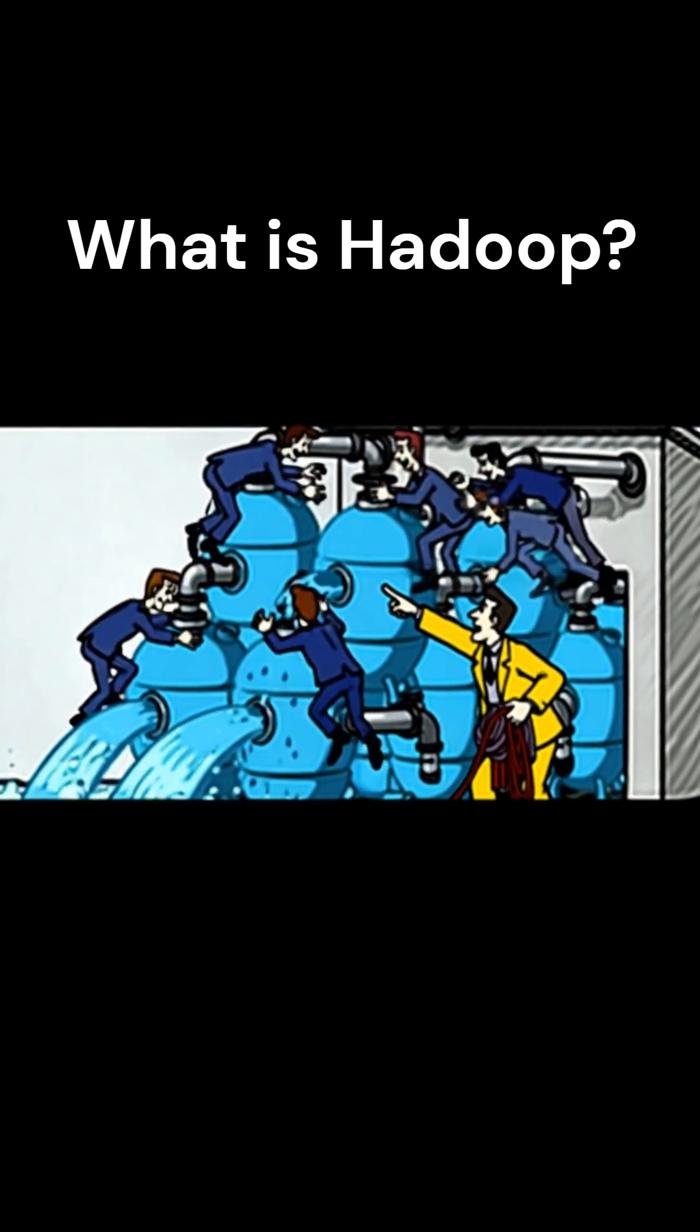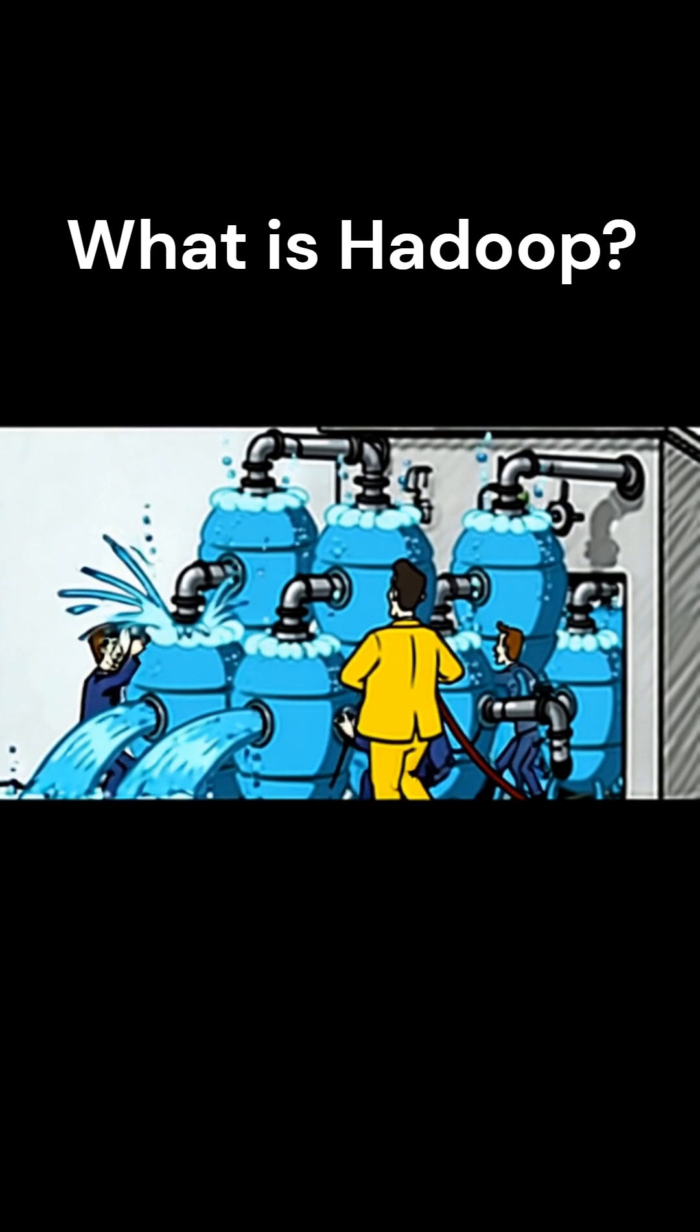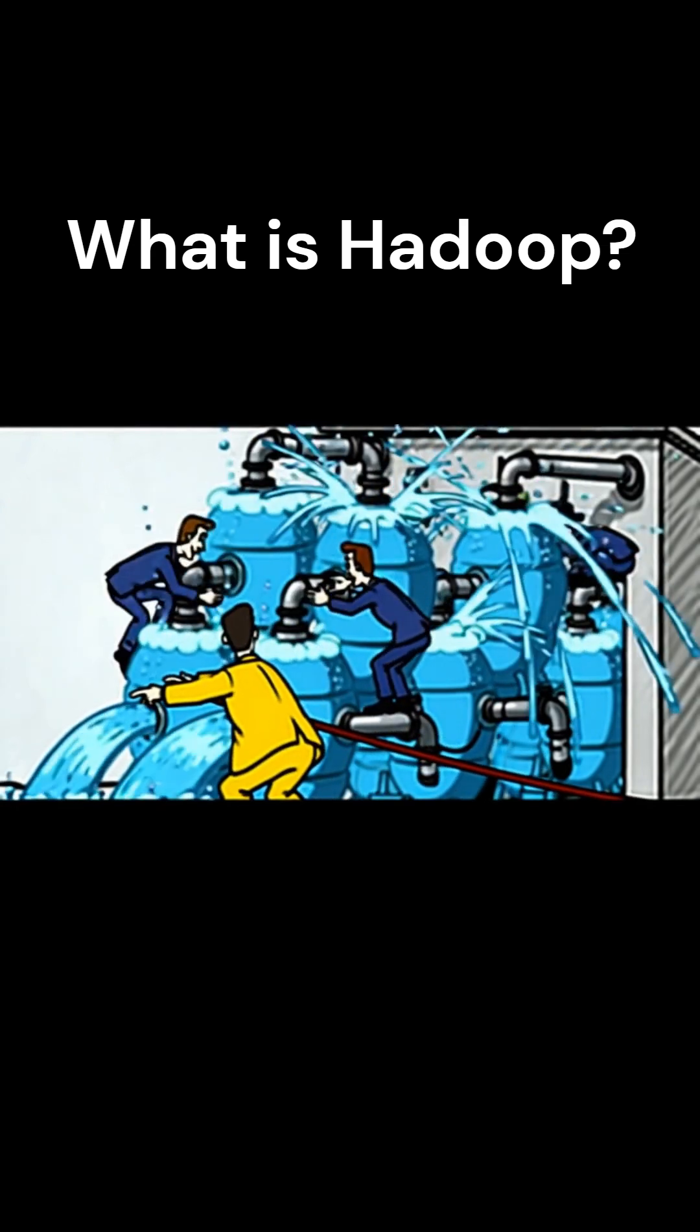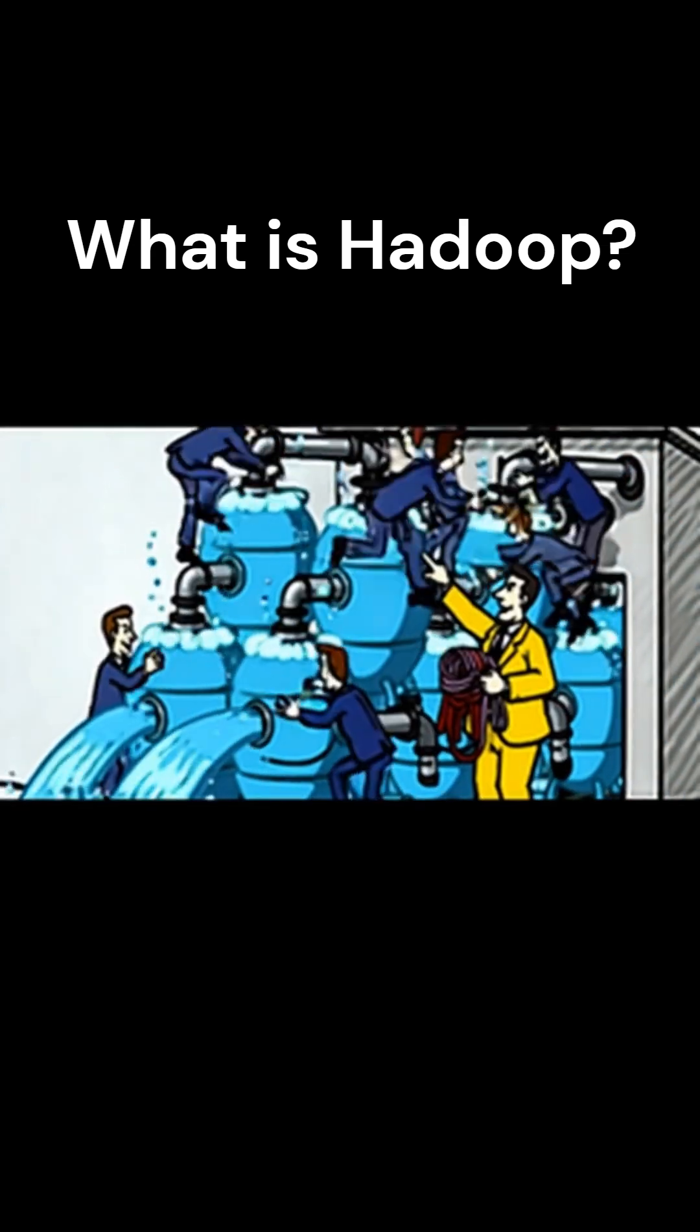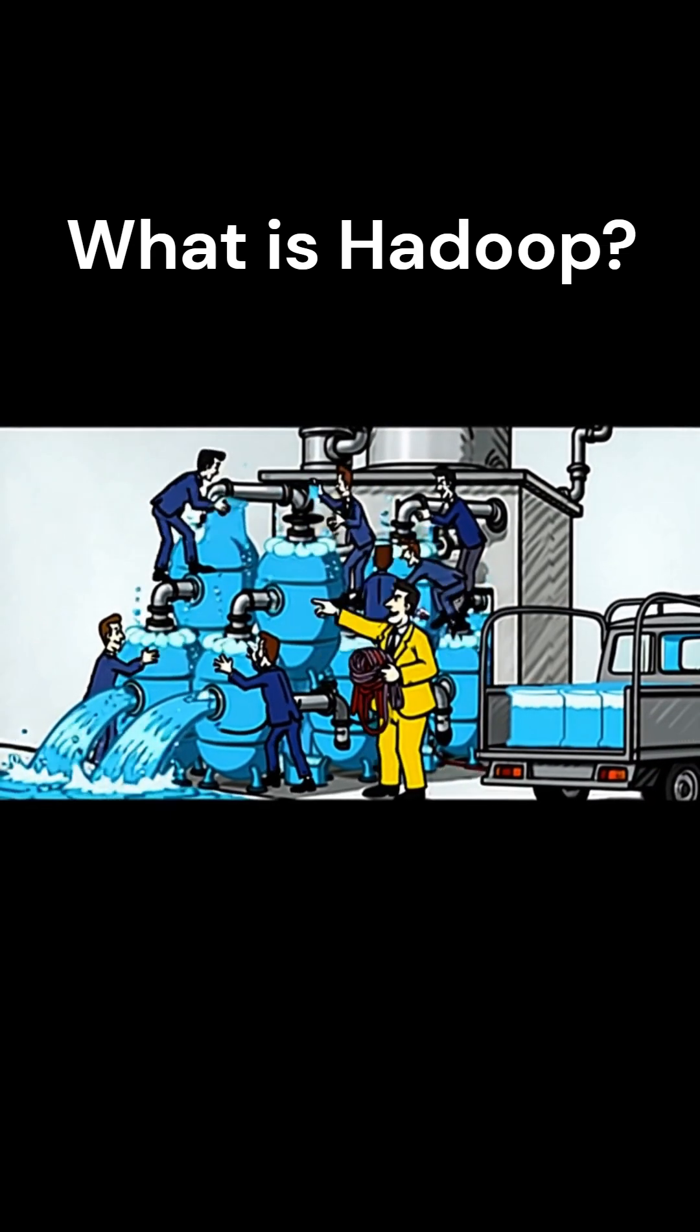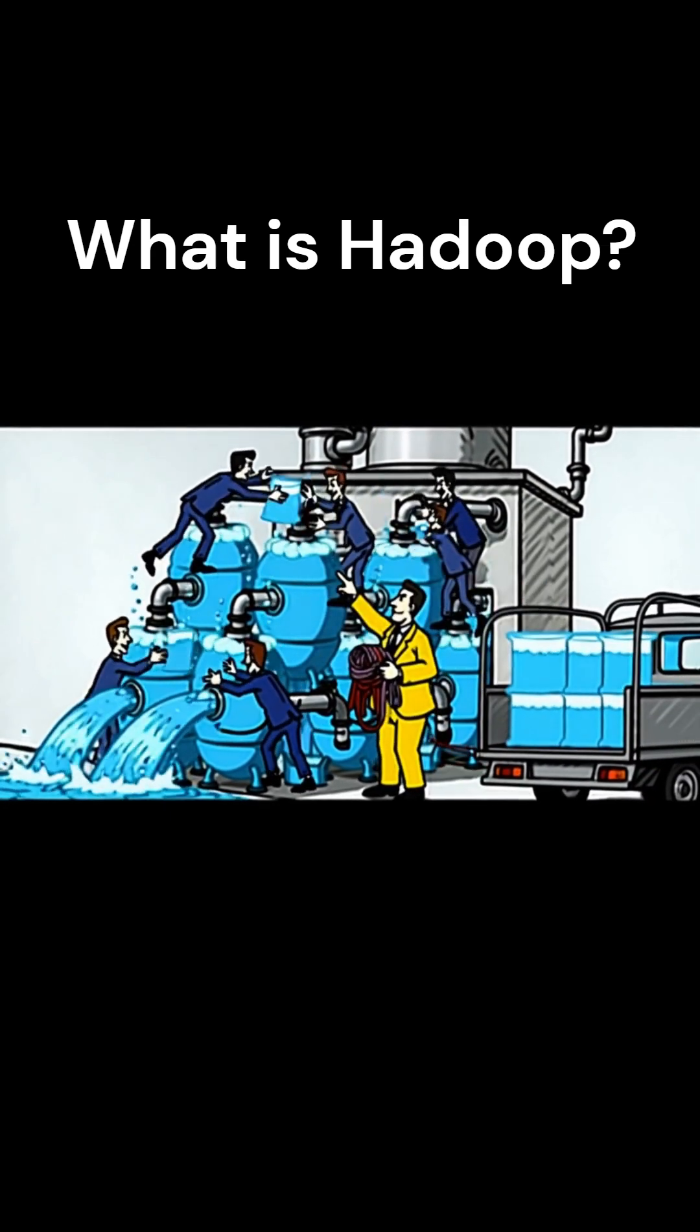Now let's talk about the workers: MapReduce and Spark. They're the engines that actually process the data. MapReduce is the older one, a bit slower, because it relies heavily on reading and writing to disk.